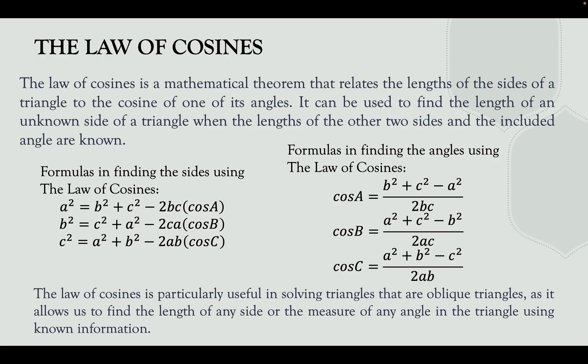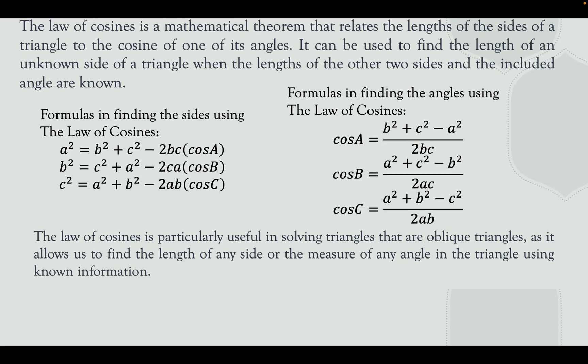The Law of Cosines is particularly useful in solving oblique triangles — that means the three angles are either all acute, or two are acute and one is obtuse. It allows us to find the length of any side or the measure of any angle using the known information.